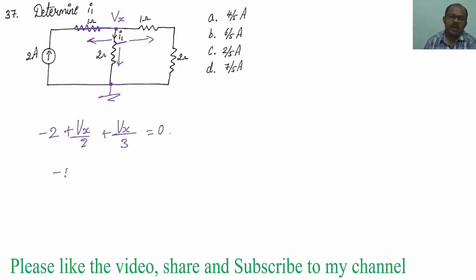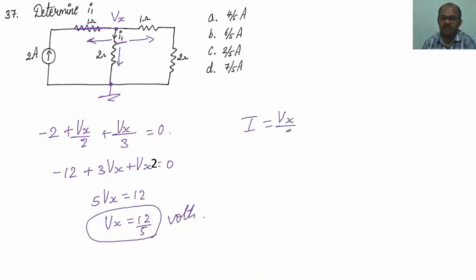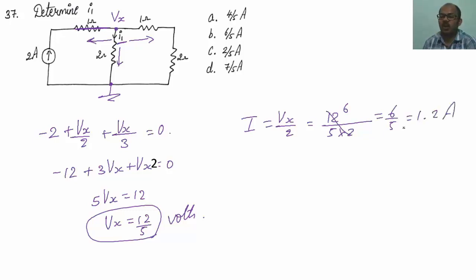On taking LCM, I will be getting minus 12 plus 3Vx plus Vx which equals 0. So 5 times of Vx equals 12, giving Vx equals 12/5 volts. The current equals Vx divided by 2, that is 12 divided by 5 times 2, which is 6/5 = 1.2 amperes. Hence, option number V is correct.